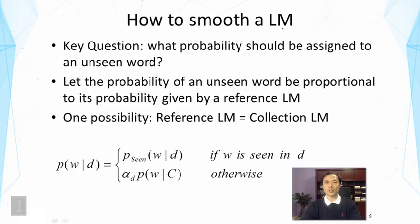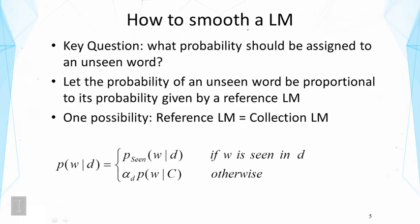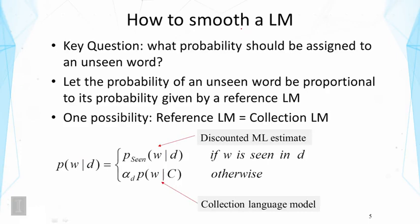More formally, we estimate the probability of a word given a document as follows. If the word is seen in the document, the probability is a discounted maximum likelihood estimate, P-sub-seen. Otherwise, if the word is not seen in the document, we let the probability be proportional to the probability of the word in the collection. The coefficient alpha controls the amount of probability mass assigned to unseen words, and all probabilities must sum to 1, so alpha-sub-D is constrained accordingly.